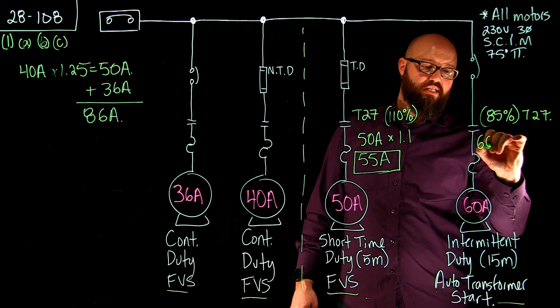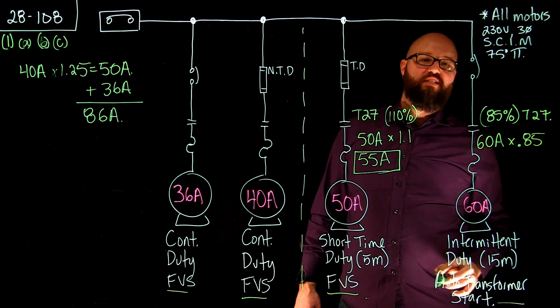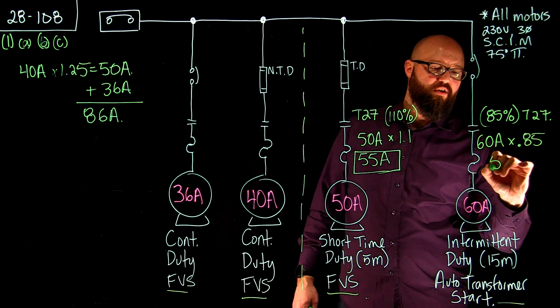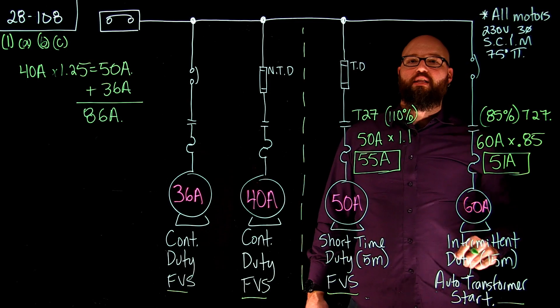All right, we're going to take our 60 amp FLA and multiply it by 0.85, and it's going to give me that calculated value of 51 amps. Again, that is my calculated value.